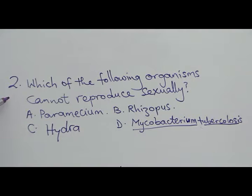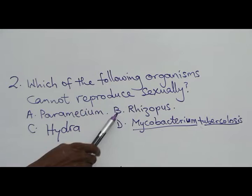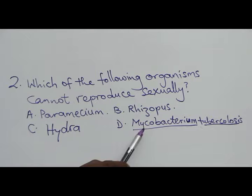Example 2. Which of the following organisms cannot reproduce sexually? A. Paramecium. B. Rhizopus. C. Hydra. D. Mycobacterium tuberculosis.